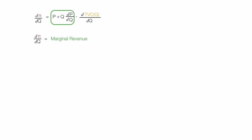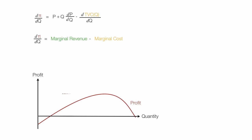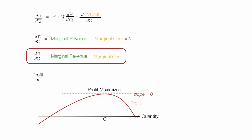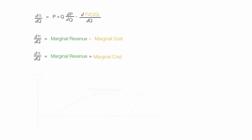This part of the equation is marginal revenue, minus this part, which is marginal cost. Profit is maximized when the slope equals zero, so I set the equation equal to zero: marginal revenue minus marginal cost equals zero. Adding marginal cost to both sides gives us marginal revenue equals marginal cost — and that's where profit is maximized. There you have it: the calculus proof for Monopoly theory.